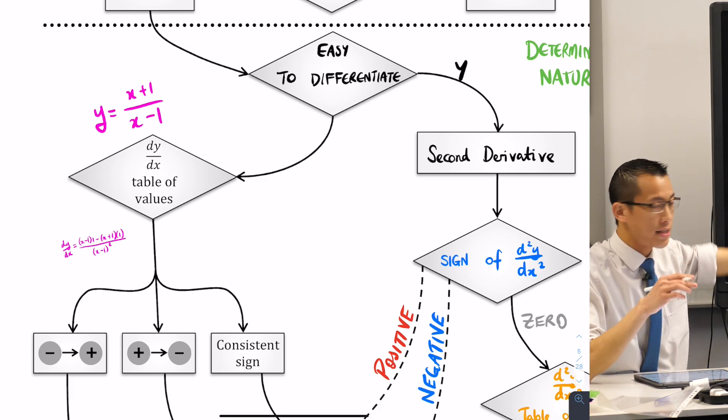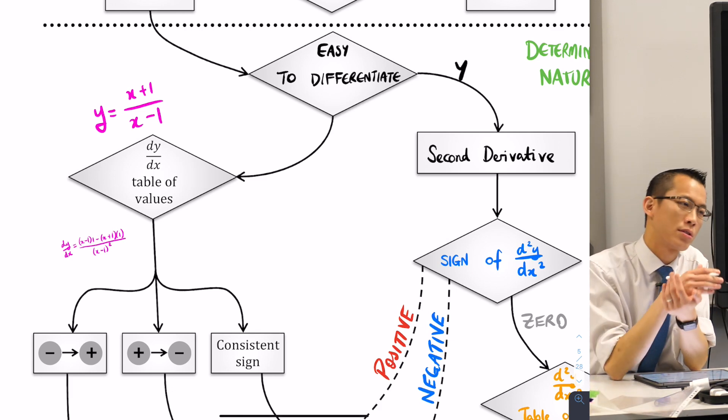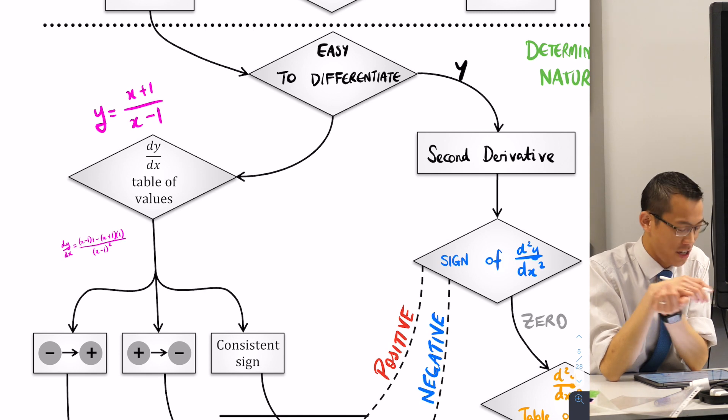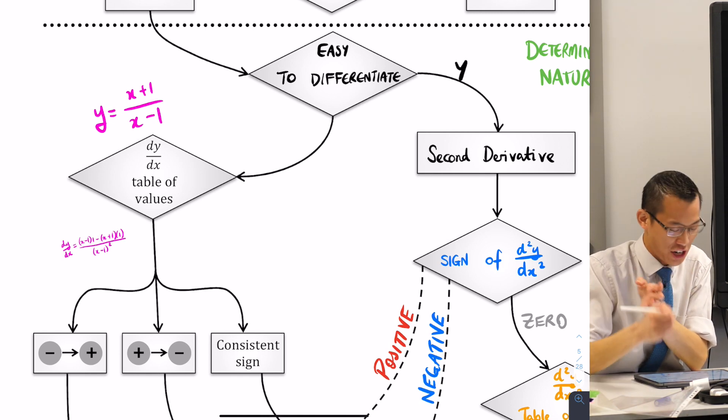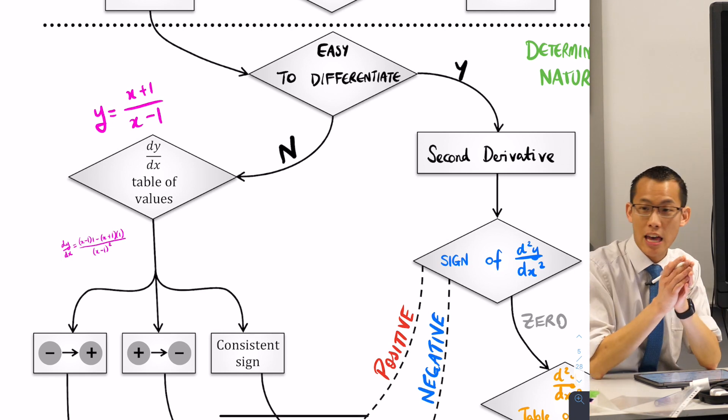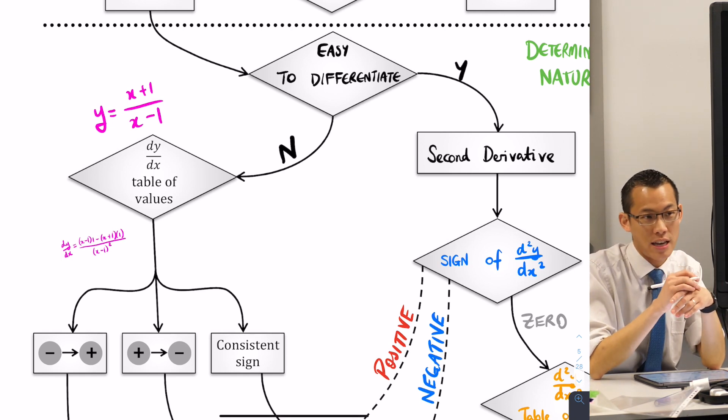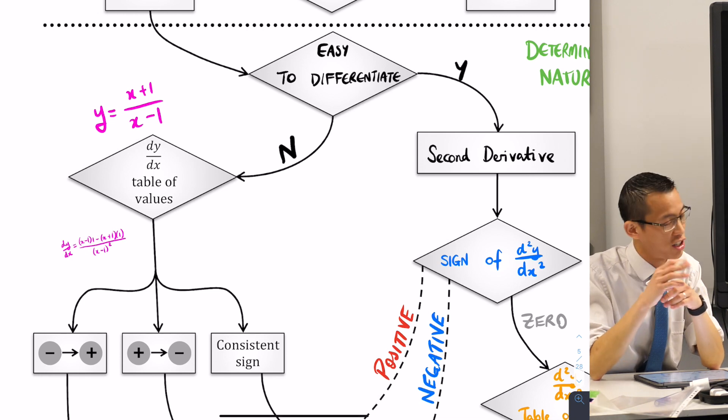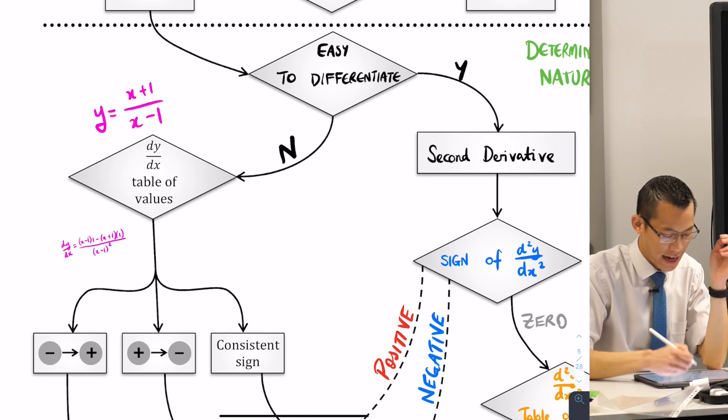If on the other hand, like this example I've just given you and quotients are the most common example of this, if you look at it and you're like I really don't want to differentiate that again, it is not easy to differentiate, then don't differentiate again. Do a table of values, even though tables of values take time, it will still be faster than going through a second derivative. That says no.